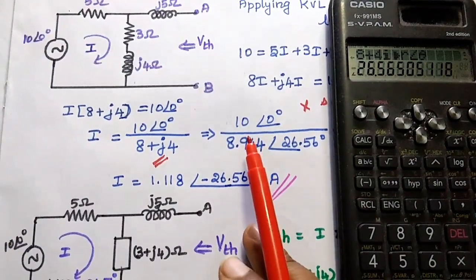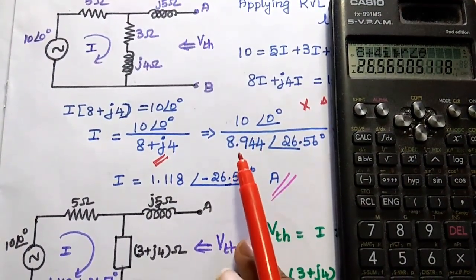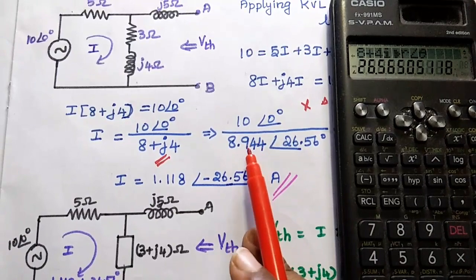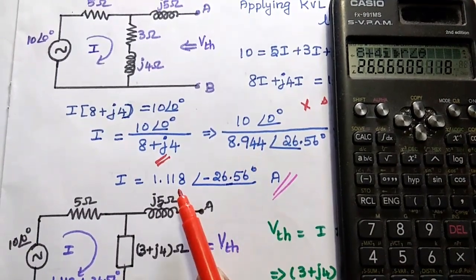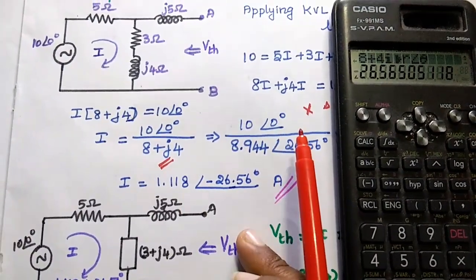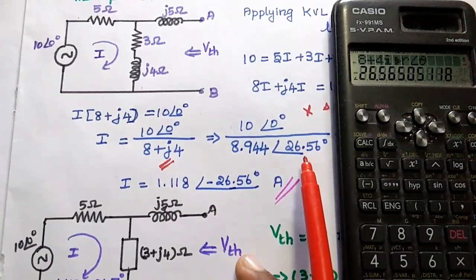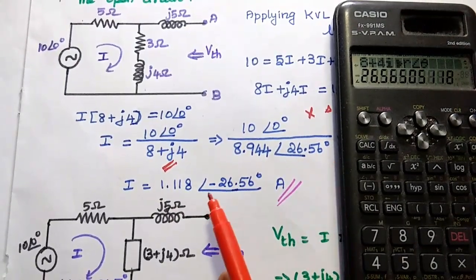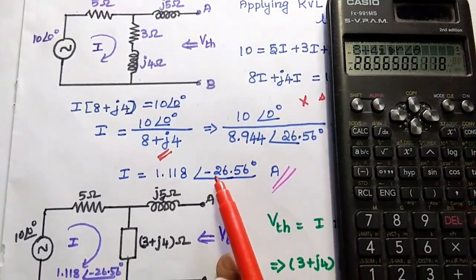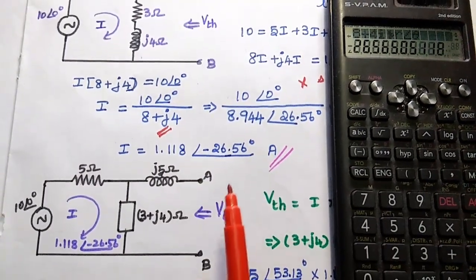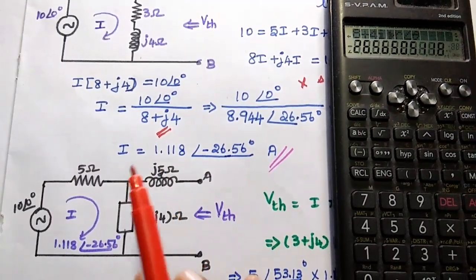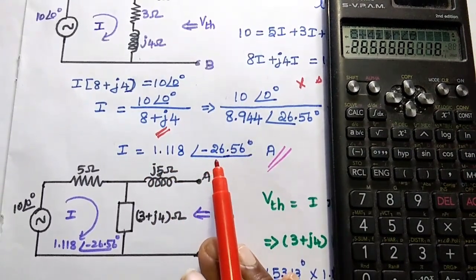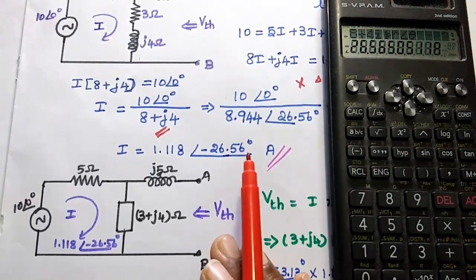We divide the magnitudes: 10 divided by 8.944 gives 1.118. For the angle, we subtract the denominator angle from the numerator angle: 0° minus 26.56° equals minus 26.56°. So the current I equals 1.118∠−26.56° Amperes.